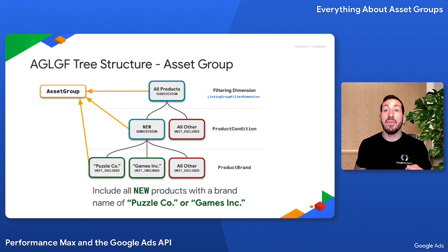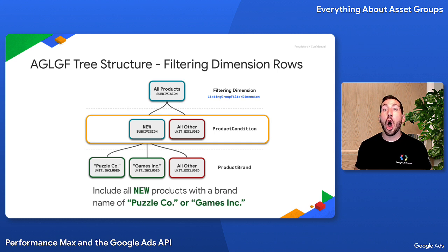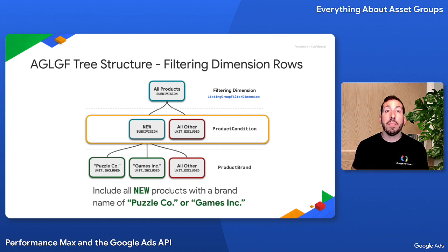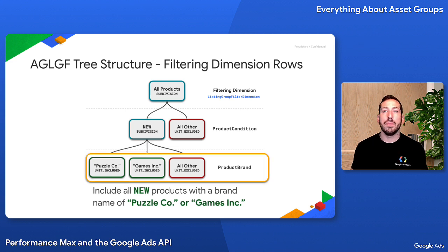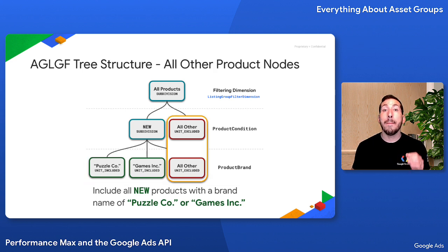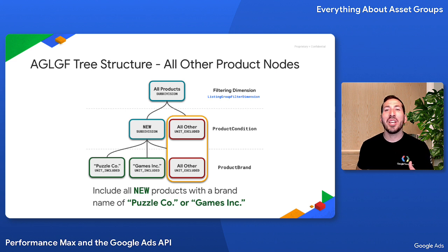All of the Asset Group Listing Group filters in a tree need to reference the same Asset Group. These trees have a few requirements worth noting. First, all nodes in the same row of a tree must use the same filtering dimension to filter products. We have one row here for product condition and another for product brand. Second, each row in the tree must contain a single Asset Group Listing Group filter with an empty case value for its listing dimension. This represents all other products not captured by the other filters in the same row of the tree.